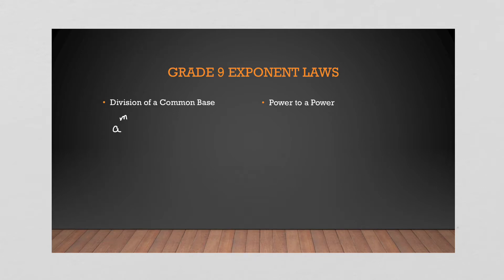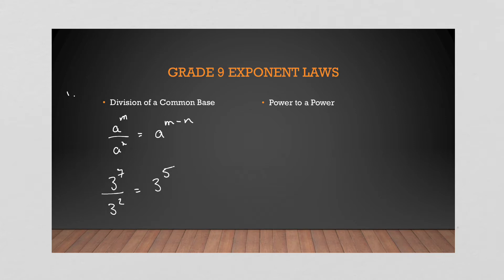Division of a common base: if you have a base and you divide, we subtract the exponents. For example, 3⁷ ÷ 3² = 3⁵. So when we multiply a common base we add, when we divide a common base we subtract.